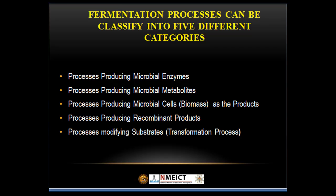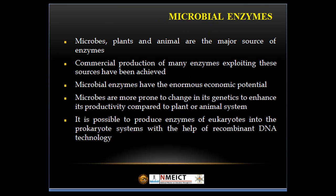Fermentation processes can be classified into five different categories. First, processes producing microbial enzymes. Second, processes producing microbial metabolites. Third, processes producing microbial cells, that is, biomass as the product. Fourth, processes producing recombinant products. And fifth, processes modifying substrate, that is, transformation processes. Now we will discuss all five processes one by one.